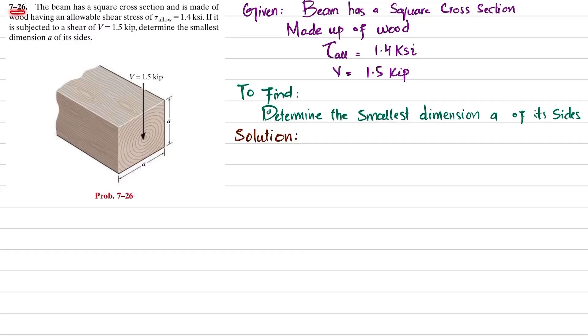Welcome back to problem 7-26. The statement is: the beam has a square cross section and is made of wood having an allowable shear stress of 1.4 ksi. If it is subjected to a shear of 1.5 kips, determine the smallest dimension a of its sides.